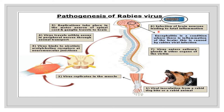From the CNS, the virus is disseminated to all sides of the central nervous system, especially the hippocampus and cerebellum. From the brain, there is centrifugal spread along sensory and autonomic nerves to various tissues — the salivary glands, skin, cornea, and organs like the pancreas, kidney, heart, and retina. This is why corneal and organ transplantation carries a risk of rabies transmission. Viremia does not occur, which is why blood contact poses no risk.